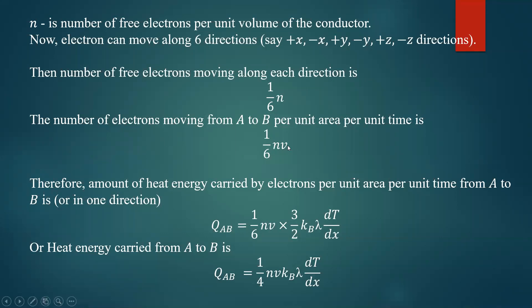V is the velocity, which is distance traveled per unit time. In one second, electrons moving at velocity V travel a distance V. Therefore the number of electrons moving from A to B per unit area per unit time is (1/6)N times V.